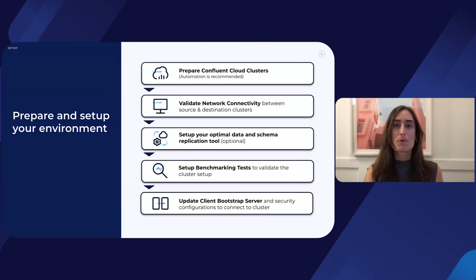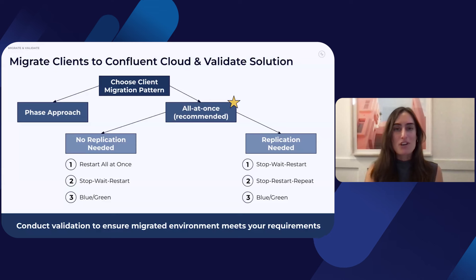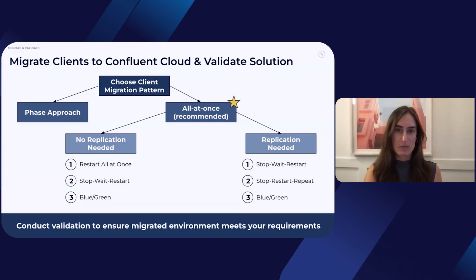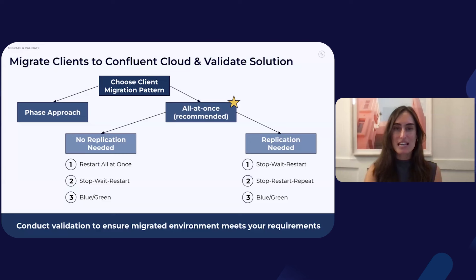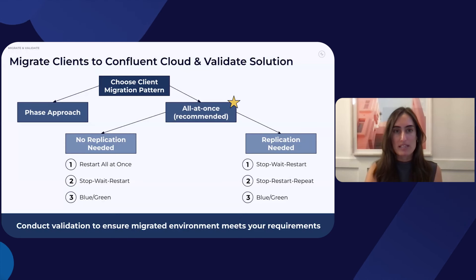Now that we've discussed how you can both plan for and set up your environment for the migration, let's talk about how to actually migrate. It is most common in migrations to migrate the entire cluster and all associated workloads at once. However, a phased approach can also be taken if necessary. We recommend migrating everything at once since it avoids the need to untangle complex client interdependencies, delivers the highest ROI on Confluent Cloud, and reduces the overall migration time. How your clients migrate to Confluent Cloud will vary based on your timeline, data processing, downtime, and data replication requirements.